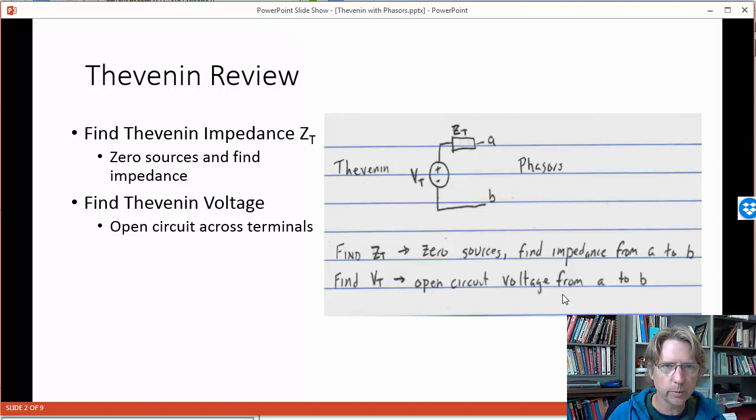Here's the review of a Thevenin circuit. You can see we want to turn any circuit with two terminals A and B into the Thevenin equivalent with a Thevenin voltage and a Thevenin impedance this time. So before it was a Thevenin resistance, we're going to generalize that with phasors to a Thevenin impedance, ZT instead of RT.